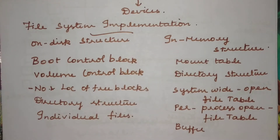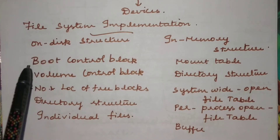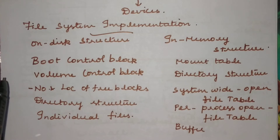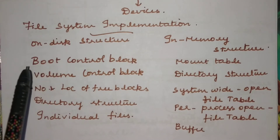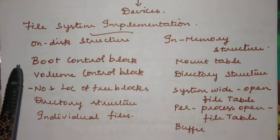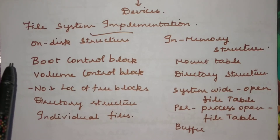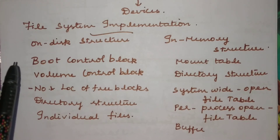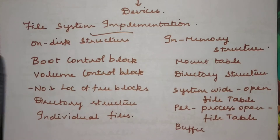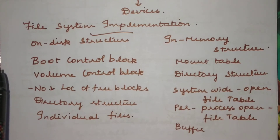When discussing the on-disk structure, we need to maintain boot information. Booting refers to how the operating system is booted, and that information is maintained separately in one block on the disk called the boot control block. This is usually the first block on the disk. If the computer system does not contain an operating system, this block will be empty. Otherwise, the first block of any disk is considered the boot control block. The name of this block may vary depending on the file system — in Unix it is called the boot block or boot sector.